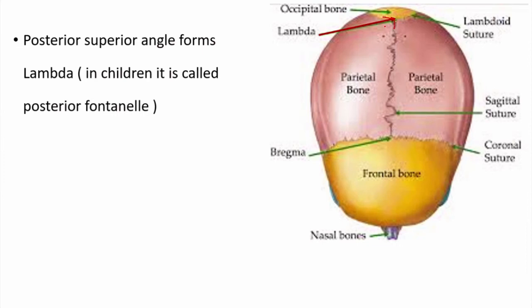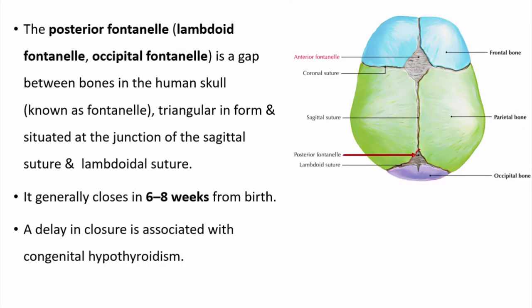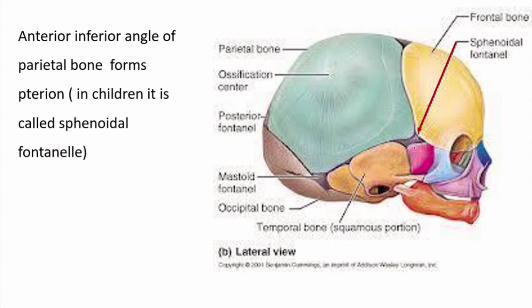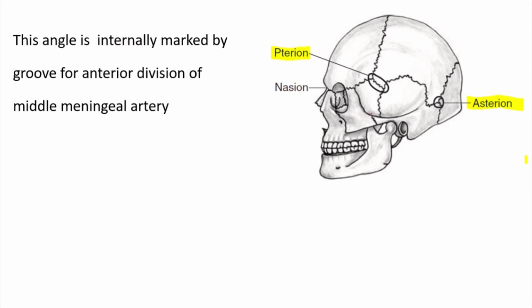The posterior superior angle is also known as the lambda, and in children it is known as the posterior fontanelle. The posterior fontanelle is triangular in shape and closes at 6 to 8 weeks from birth. Premature complete ossification of a suture is called craniosynostosis. The anterior inferior angle of the parietal bone is also known as the pterion, and this membranous portion in children is known as the sphenoidal fontanelle. The pterion is important clinically because internally it is related with the groove for the anterior division of the middle meningeal vessels.